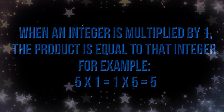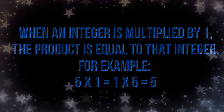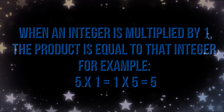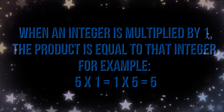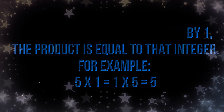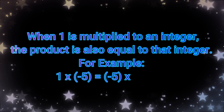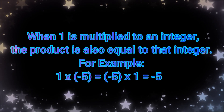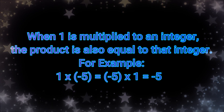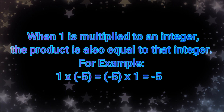When an integer is multiplied by 1, the product is equal to that integer. For example, 5 times 1, or 1 times 5 is equal to 5. When 1 is multiplied to an integer, the product is also equal to that integer. For example, 1 times negative 5, or negative 5 times 1 is equal to negative 5.